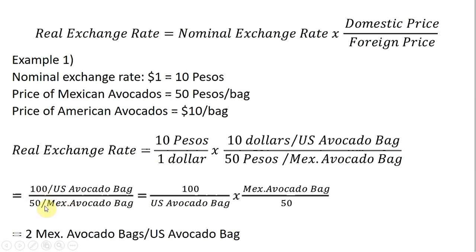Then I'm going to manipulate this a little bit. We've got 50 divided by one Mexican bag of avocados in the denominator, so I'm going to take the reciprocal of that — Mexican avocado bag divided by 50 — and multiply through the denominator and numerator. Simplifying, 100 divided by 50 is 2, giving us 2 Mexican avocado bags per one U.S. avocado bag. That is the real exchange rate.